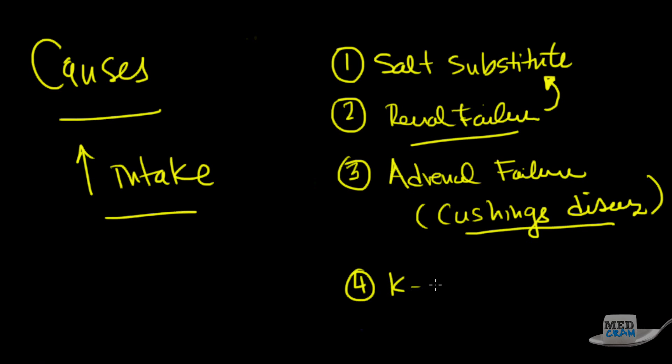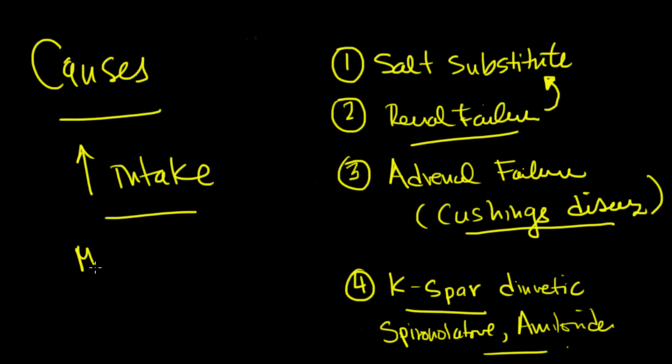The last cause is potassium sparing diuretics, such as spironolactone or amiloride. Incidentally, other medications that could also increase your potassium include ACE inhibitors, which inhibit angiotensin-converting enzyme in the lungs and affect the ability to make aldosterone. Beta blockers can also affect shifting of potassium and cause it to go out of the cell. We'll talk about treatment with beta agonists later.